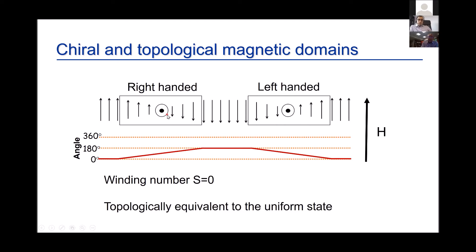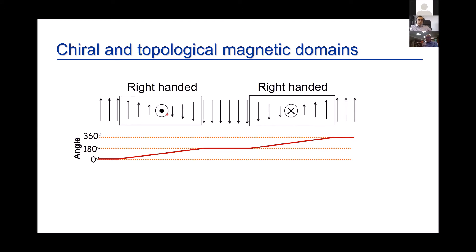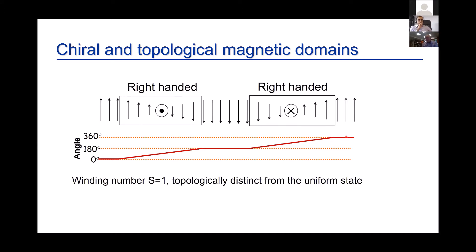This is topologically equivalent to the uniform state, so applying a field causes the two domain walls to shrink into each other and merge — it's easy to annihilate them. But if you add two right-handed domain walls — two walls with the same chirality — you pick up a phase of 360 degrees across the structure, giving a winding number of one. This is topologically distinct from the uniform state. Applying a magnetic field cannot continuously deform it into the uniform state; it is topologically stabilized or protected and requires much higher fields.